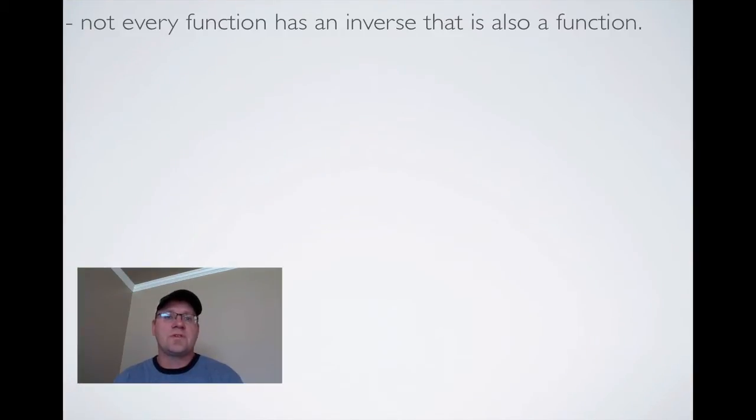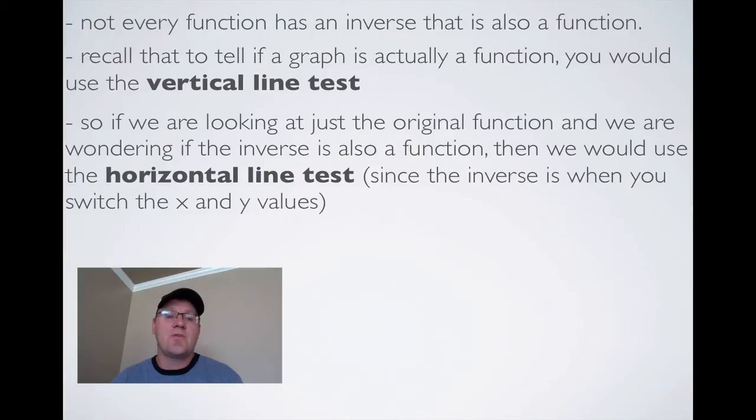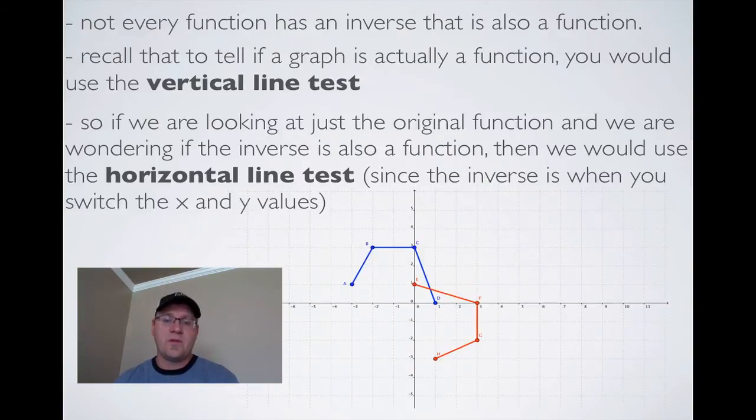Not every function has an inverse that is also a function. Recall that to tell if a graph is a function, we use the vertical line test: if a vertical line passes through the graph once, it's a function; if it passes more than once, it's not. When you're wondering if the inverse is going to be a function, we use the horizontal line test. Since we've flipped the x and y values, using the horizontal line test on the original function will tell us if the inverted graph is also a function.